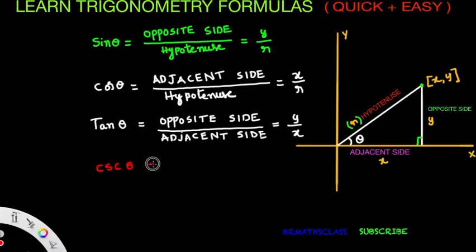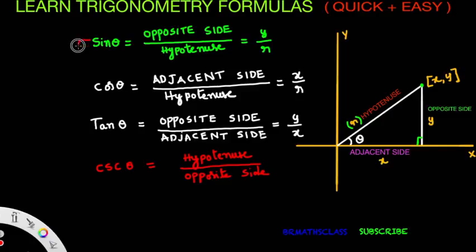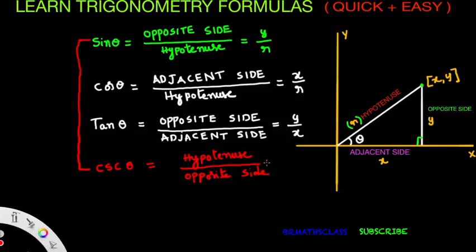Cosecant theta is defined as the reciprocal of sin theta. Observe: sin theta is opposite side by hypotenuse, while cosecant theta is hypotenuse by opposite side — they are reciprocal formulas. So if you learn the definition of sin theta, no need to separately remember cosecant theta. Cosecant theta equals R by Y.